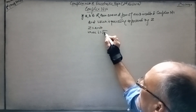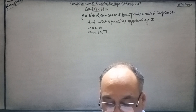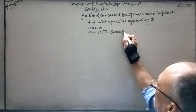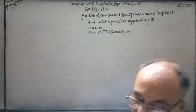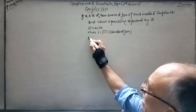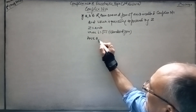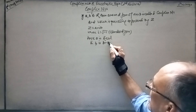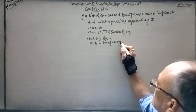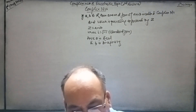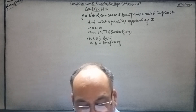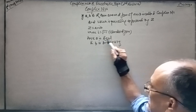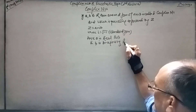This is called the standard form. In the standard form x plus iy, a is the real part and b is the imaginary part. A complex number is just the combination of real and imaginary numbers. A is the real part and b is the imaginary part.